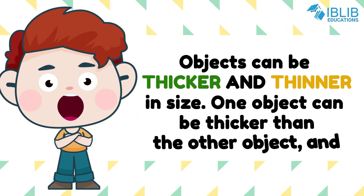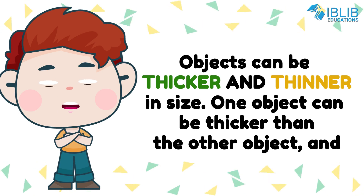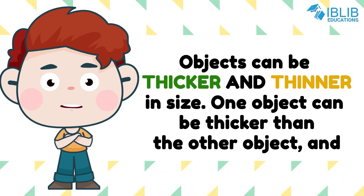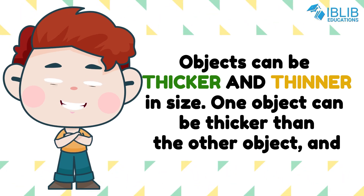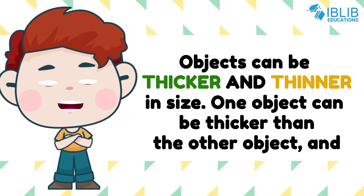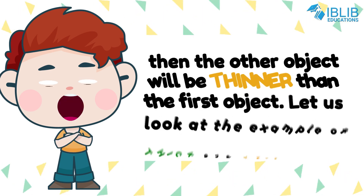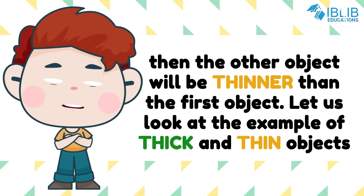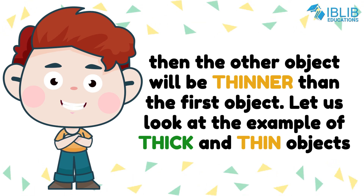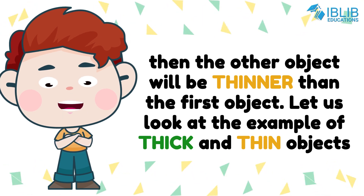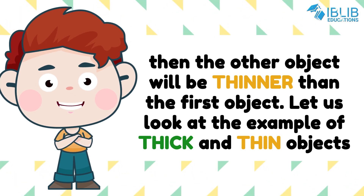Objects can be thicker and thinner in size. One object can be thicker than the other object, and then the other object will be thinner than the first object. Let us look at the example of thick and thin objects.